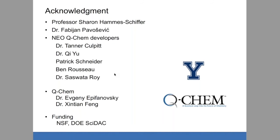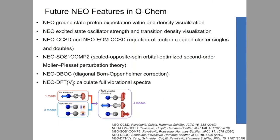Next question: can we do IR calculations using a NEO method — is it implemented yet? This falls into the NEO-DFTV method I was talking about earlier. We are implementing it in Q-Chem, but it will be available in future Q-Chem versions. This can give us a fully coupled vibration which can be compared to the IR spectrum, and it includes anharmonicity.